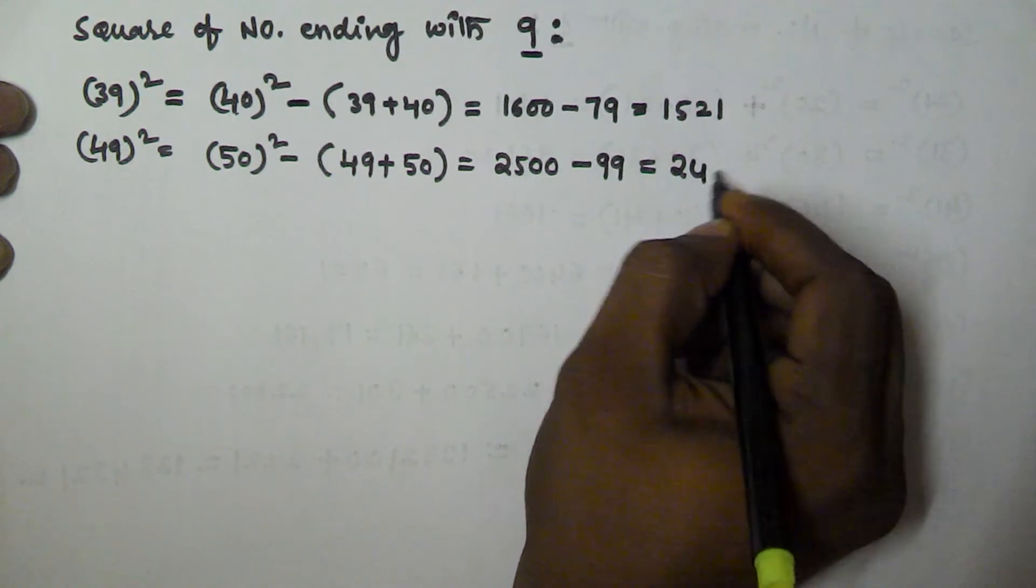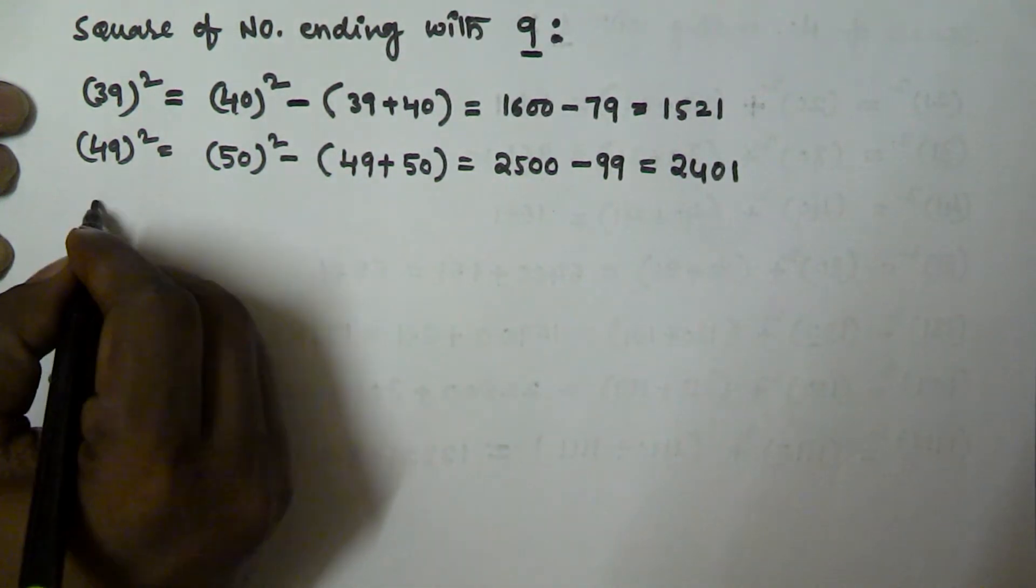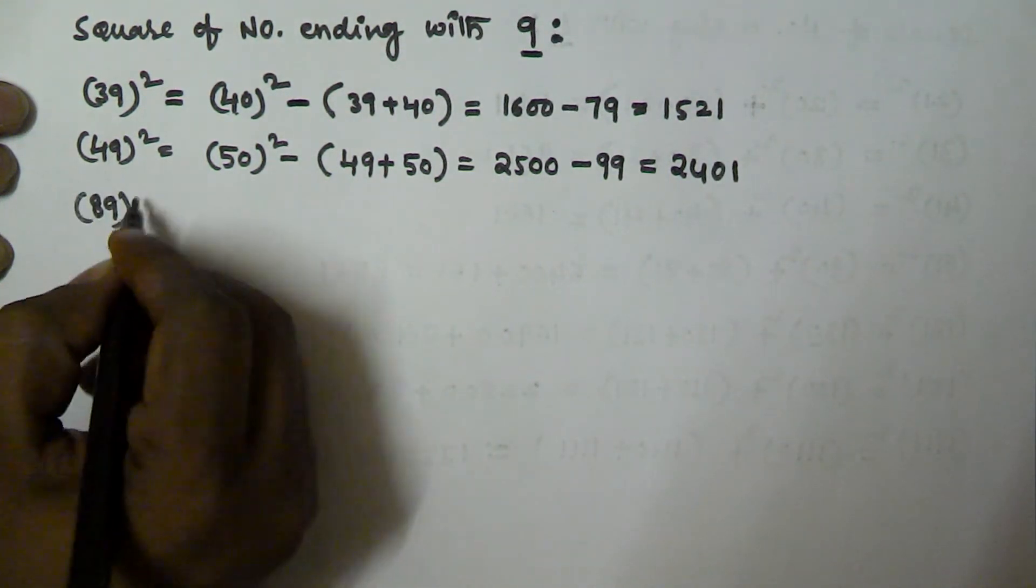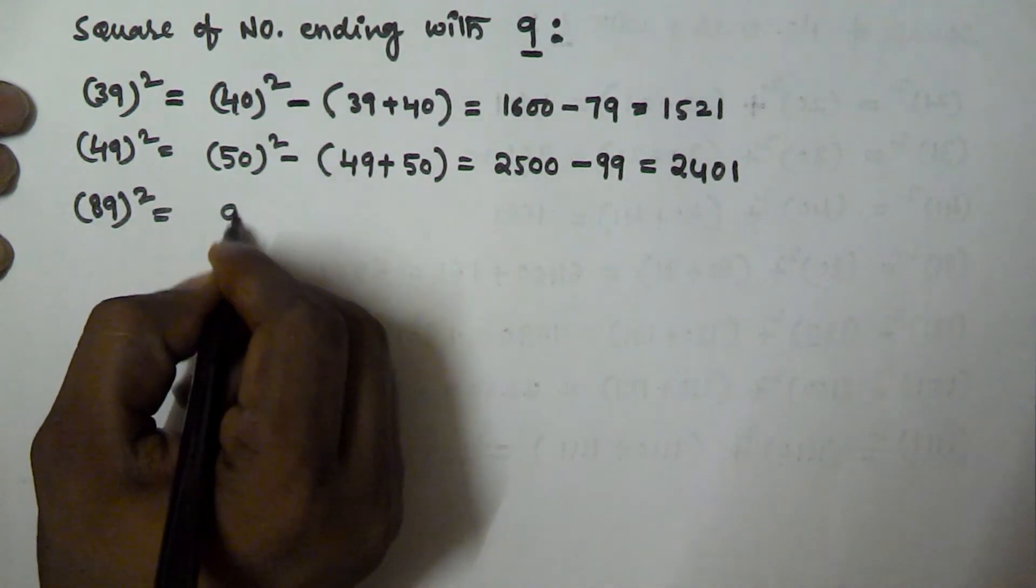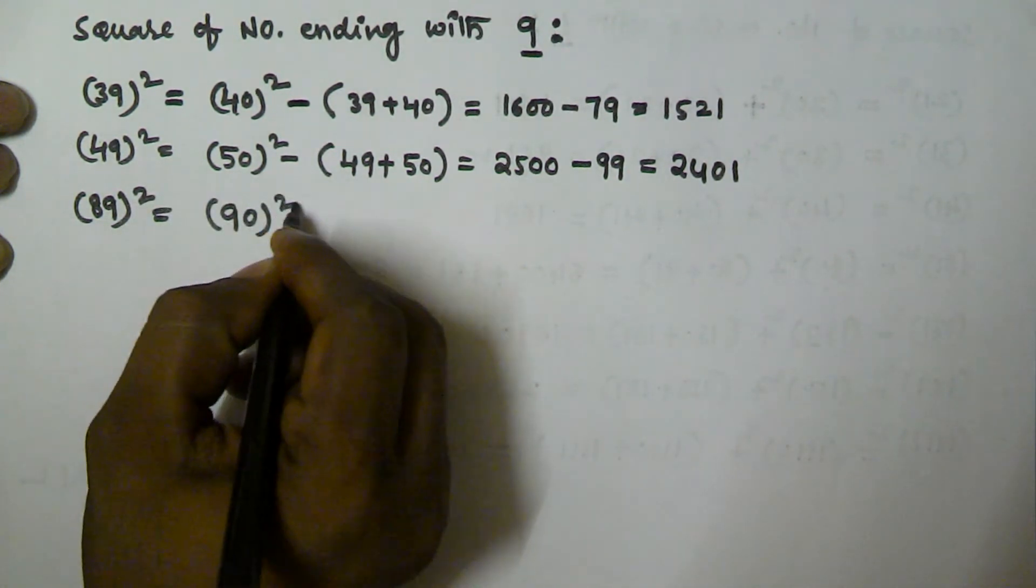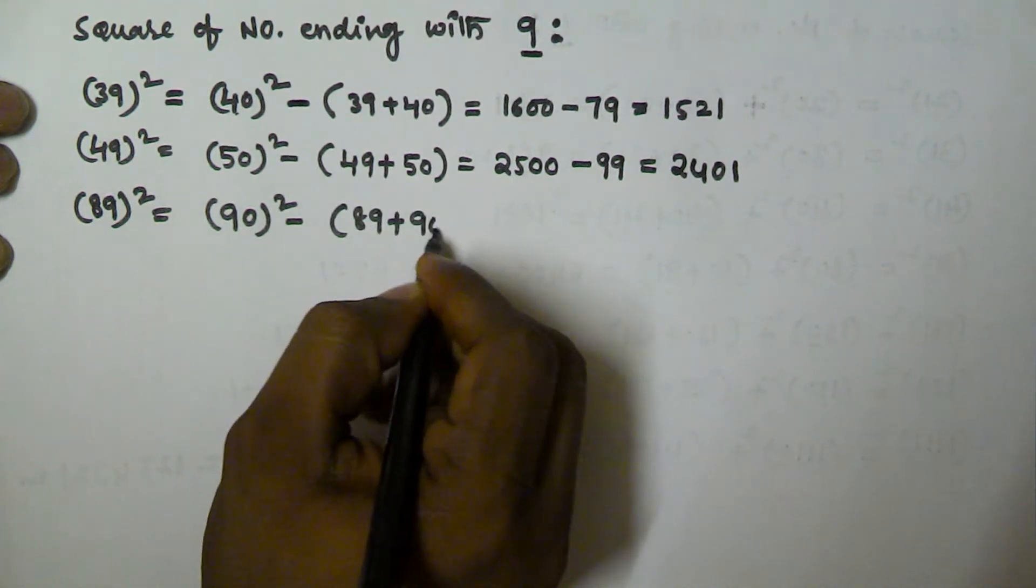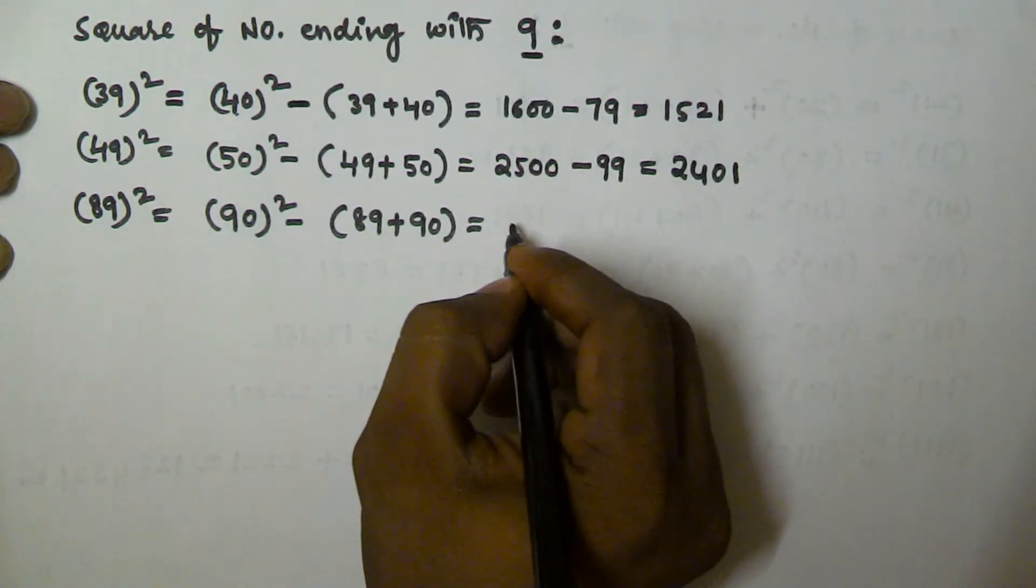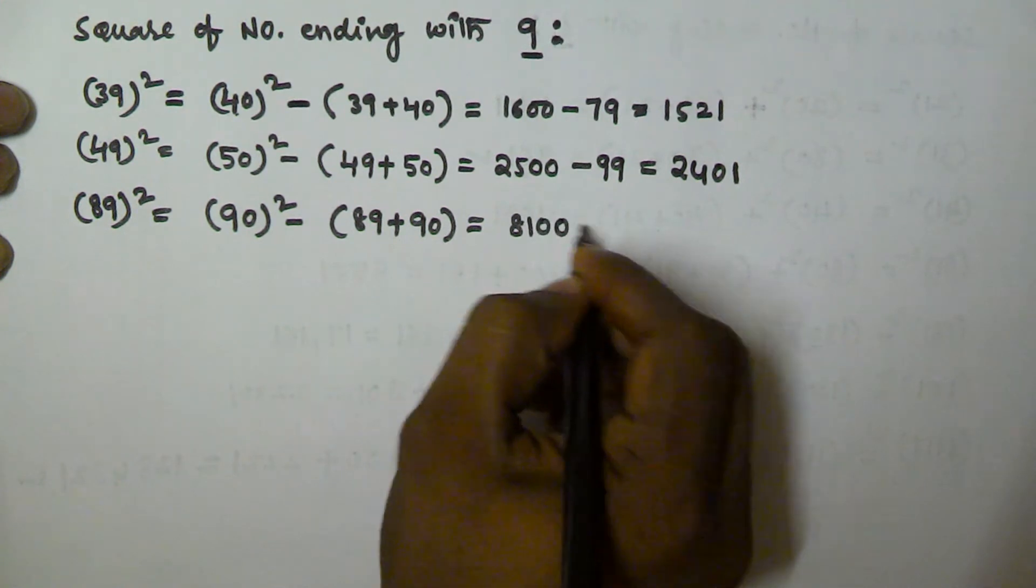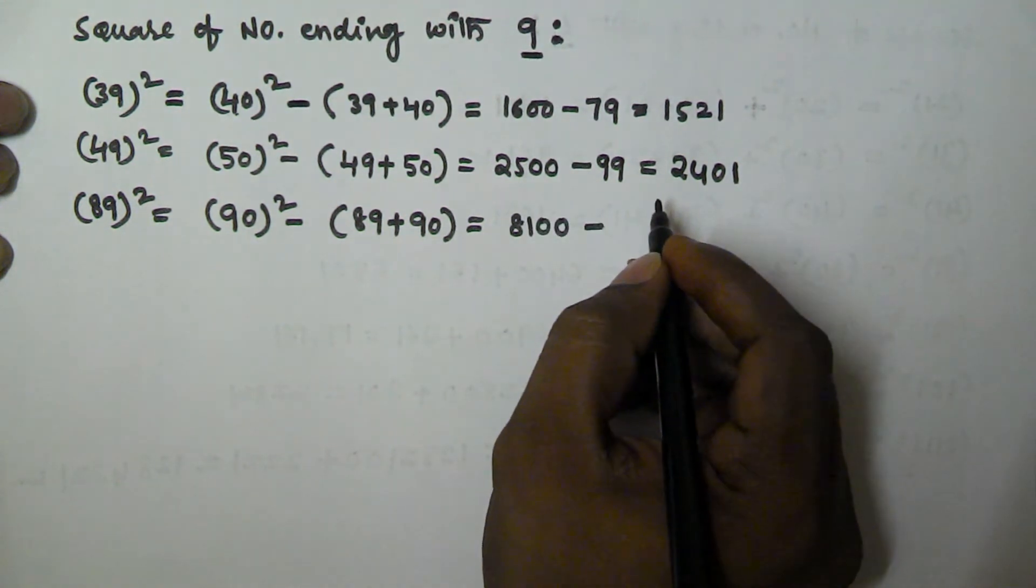Next, find 89 square. That is equivalent to 90 square minus 89 plus 90, which equals 8100 minus 179.